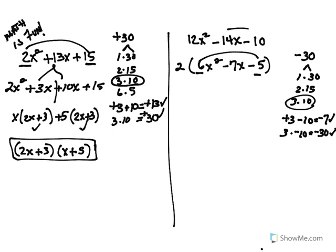So I'm going to rewrite my problem. Leave your GCF sitting there for a minute and just deal with the trinomial. So my middle term is going to be rewritten using the two factors.